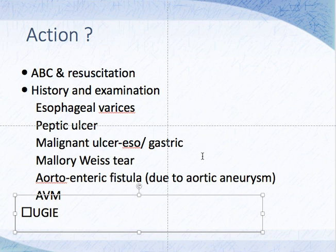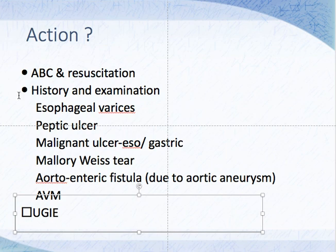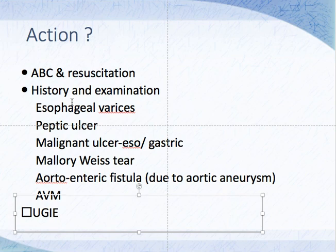Aortic-enteric fistula: a thoracic aneurysm may rupture to the esophagus, or an abdominal aortic aneurysm can rupture into the duodenum, causing an aortoduodenal fistula. On quick history, the patient may already have diagnosed varices or be an alcoholic with features of liver insufficiency — abdominal distension due to ascites. On examination, you may see features of cirrhosis: liver failure, parotid swellings, gynecomastia, evidence of portocaval shunts like caput medusae, and edema.